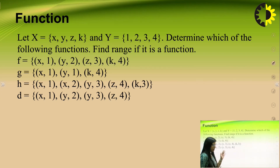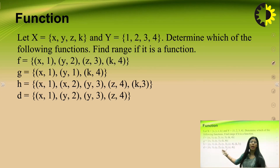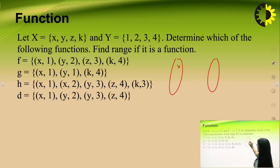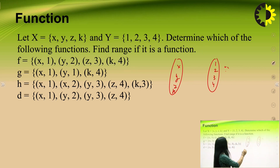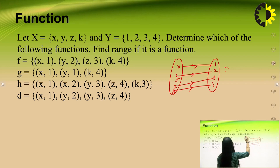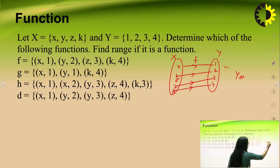Let us check if four given mappings are functions. In the first example, set X contains X, Y, Z, K and set Y contains 1, 2, 3, 4. The association is X to 1, Y to 2, Z to 3, and K to 4. Since all elements of set X are associated with an element of set Y, yes, this is a function.